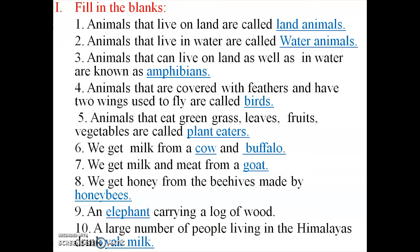Animals that eat green grass, leaves, fruits, and vegetables are called plant eaters. Some animals eat only plant products. In the previous lesson we learned about vegetarian and non-vegetarian food — it is the same concept for animals. Animals are categorized by their food: some eat only plants, some eat only flesh, and some eat both.